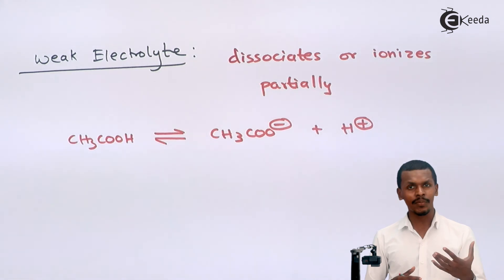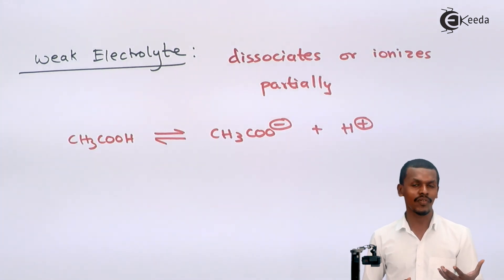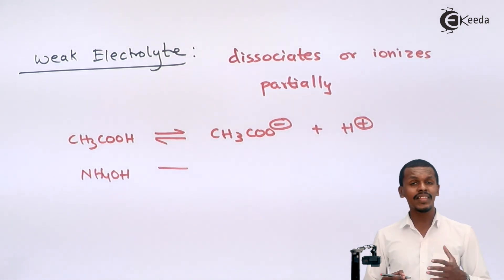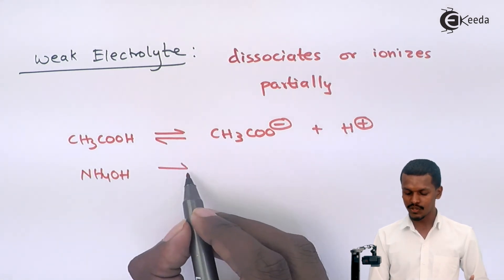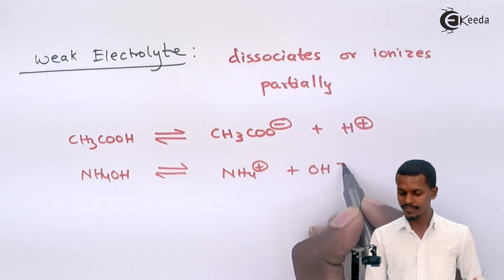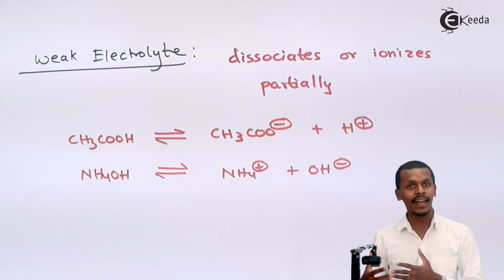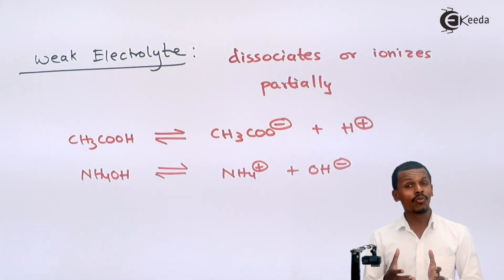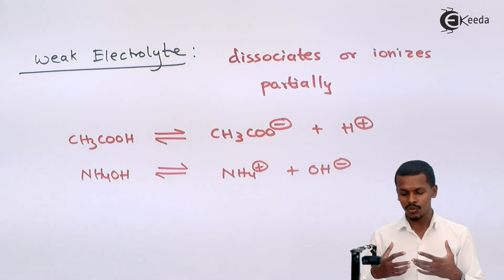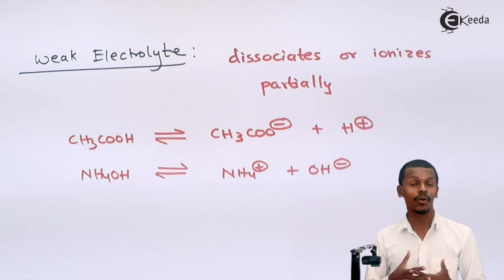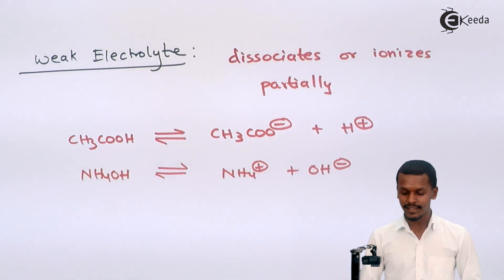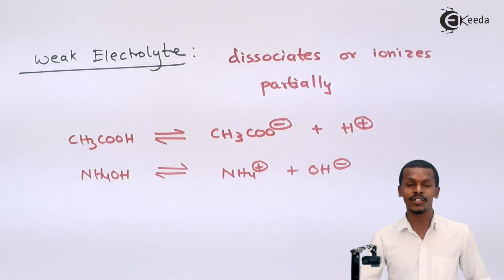Similarly, we can give another example — this was a weak acid, so we can give an example of a weak base. NH4OH is a base that does not dissociate completely in water. It gives us NH4⁺ and OH⁻ ions. Since it gives us a cation and an anion, it is called an electrolyte, but because it does not dissociate completely, it is called a weak electrolyte, or we could also call it a weak base.